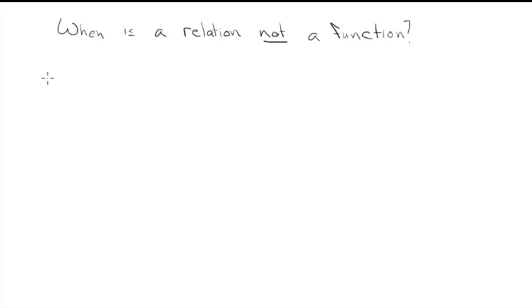Recall our definition. A function assigns each input a unique output. And this is the key, a unique output.